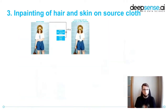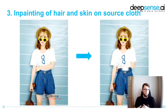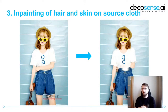Step three: inpainting of hair and skin on source cloth. Sometimes we can see skin parts or hair on the source cloth and we don't want to transfer those parts. So we need to inpaint them as a pre-processing step. We initially used the inpainting function from the CV2 library. It's very simple — it just looks for the closest pixel outside the inpainting mask. As you can see, the result is not so beautiful. However, we had no time for anything more sophisticated, so we stuck with it during our project.